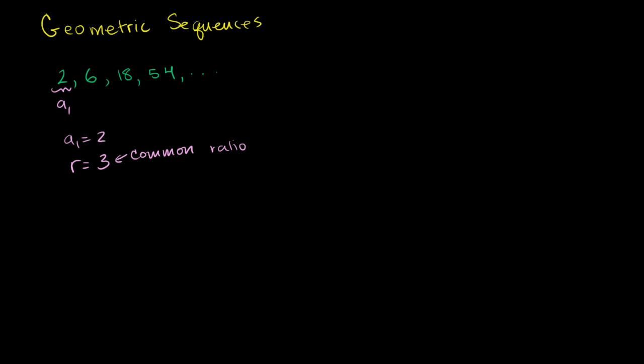So if someone were to tell you, hey, you've got a geometric sequence, a1 is equal to 90, and your common ratio is equal to negative 1/3, that means that the first term of your sequence is 90. The second term is negative 1/3 times 90, which is what? That's negative 30, right? 1/3 times 90 is 30, and then you put the negative number.